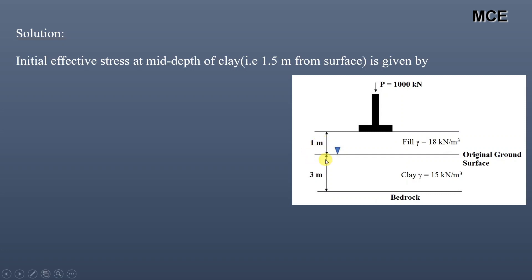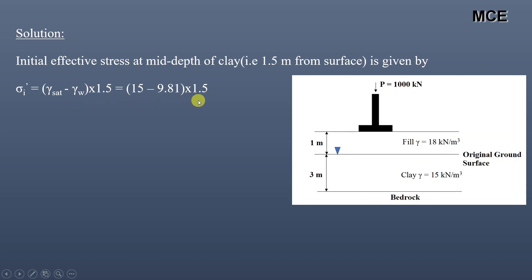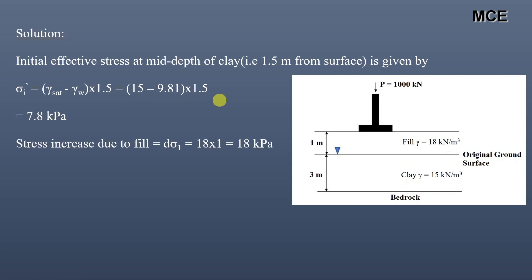The initial effective stress σ'i is equal to (γ_saturated − γ_w) × 1.5, which is equal to (15 − 9.81) × 1.5, which is equal to 7.8 kilopascal.